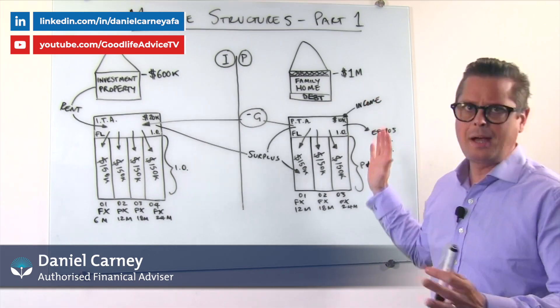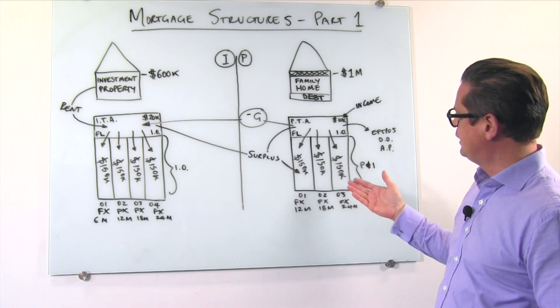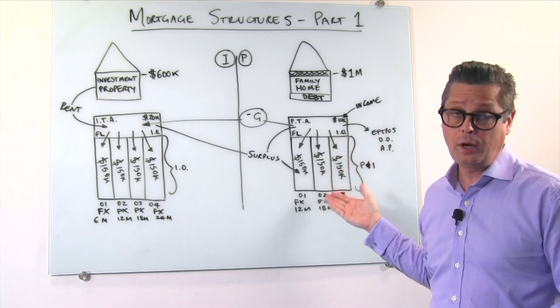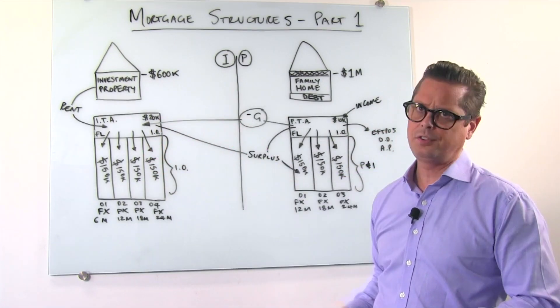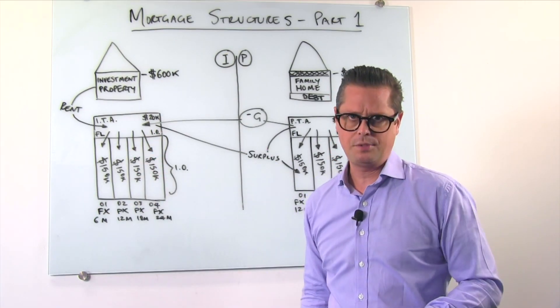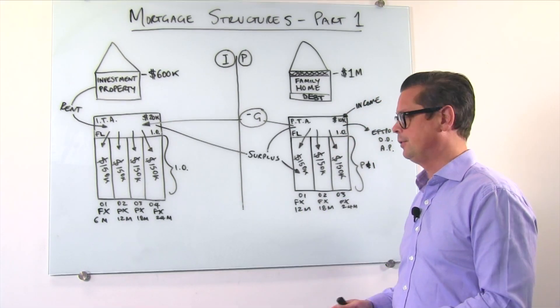So this is just a dummy example of a client who's got a million dollar house and a debt of four hundred and fifty thousand dollars and they also own an investment property which is worth six hundred thousand dollars and it's filled up with debt. Six hundred thousand dollars worth of debt. So let's go through how we would structure that for a client.